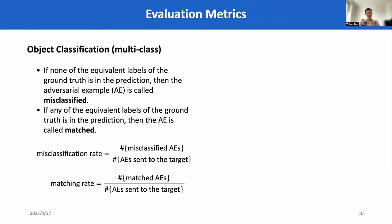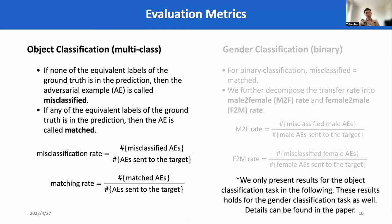Therefore, based on these techniques, we modify the evaluation metrics as follows. If none of the equivalent labels of the ground truth label is in the prediction, then we call the AEs misclassified. In addition, if any of the equivalent labels of the ground truth label is in the prediction, then we call this AEs a match. So the misclassification rate is an extension of the traditional transfer metrics for untargeted transfer attacks, and the matching rate is an extension of transfer rates for targeted transfer attacks. In the paper, we also measured the transfer rates in gender classification tasks, but for brevity in the presentation, we omit these results.